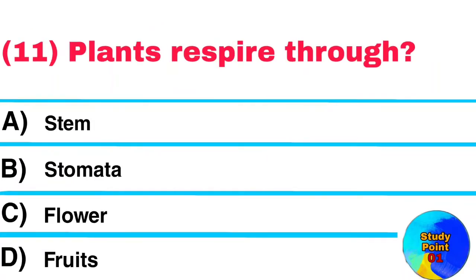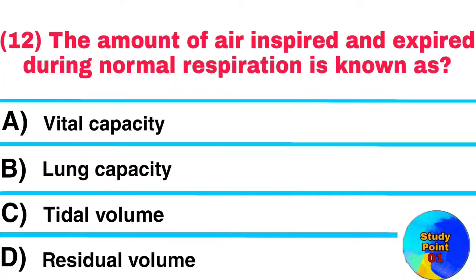Question No. 11. Plants respire through? Answer: Stomata. Question No. 12. The amount of air inspired and expired during normal respiration is known as? Answer: Tidal volume.